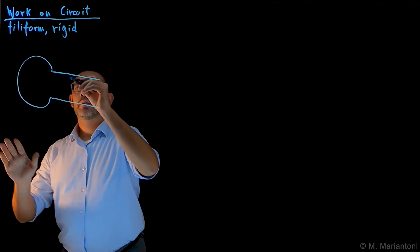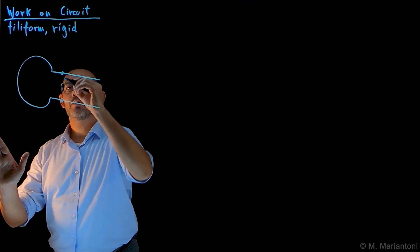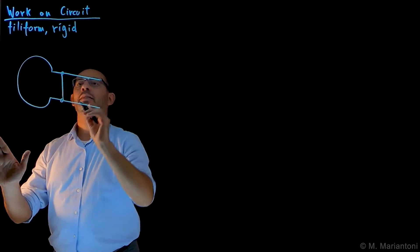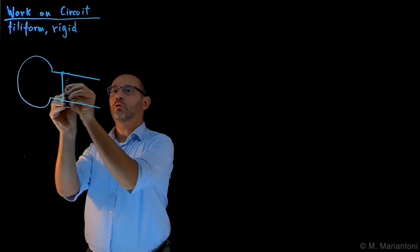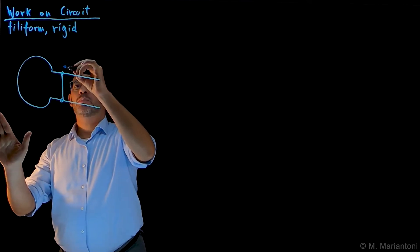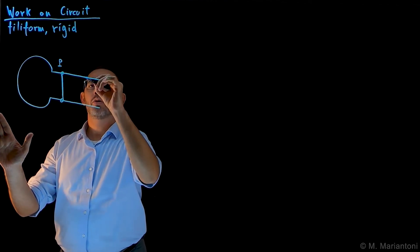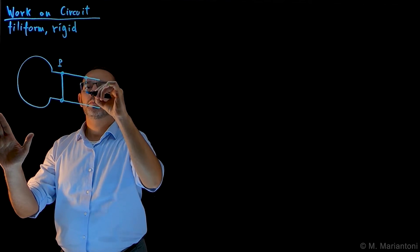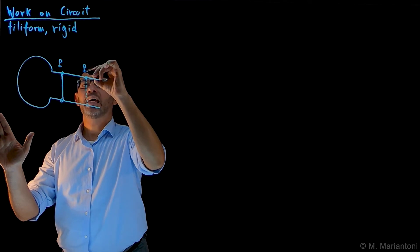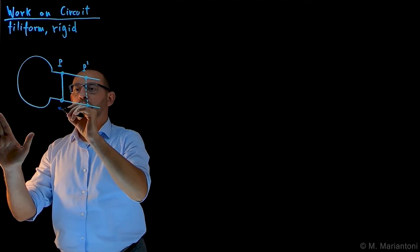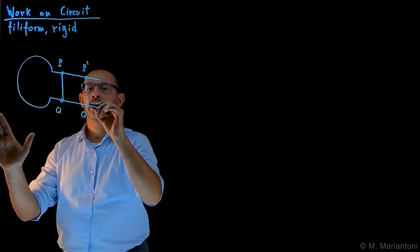In order to close it up, I need to have something which is free to move. There is a little ring here, also conducting, as well as here, and these two rings are connected. This part of the circuit is free to move along these two tracks. This point up here I call capital P, and it could move all the way to another point, capital P prime. Down here, this is capital Q, and it can move to capital Q prime.